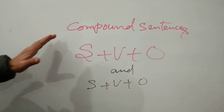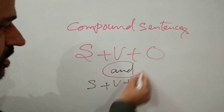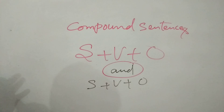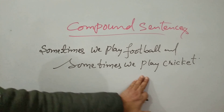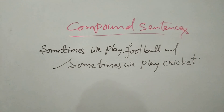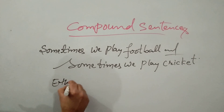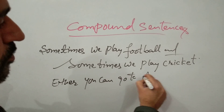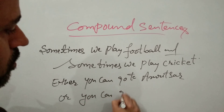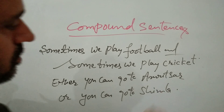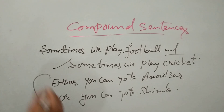In compound sentences, you add two simple sentences combined together with a conjunction like 'and,' 'but,' 'so,' 'either/or.' For example: 'Sometimes we play football and sometimes we play cricket' — these are two simple sentences combined with the conjunction 'and.' Another example: 'Either you can go to Amritsar or you can go to Shimla.' You are supposed to write four to five compound sentences if possible in any essay in order to get a good score.